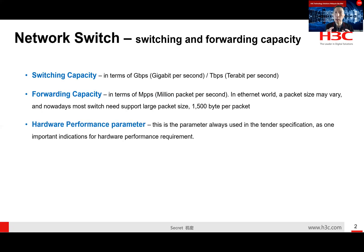As a network switch, these two parameters are very fundamental. Talking about switching capacity - the unit for switching capacity is gigabit per second or terabit per second. Because switches are becoming more and more powerful, we are now talking about terabit per second or even higher speeds.